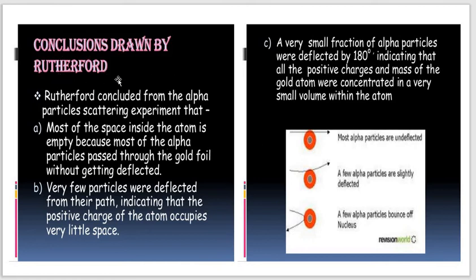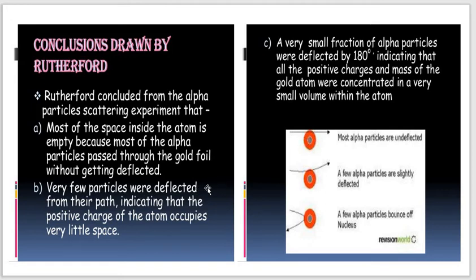Conclusions drawn by Rutherford from the Gold Foil Experiment: Most of the alpha particles passed undeflected, indicating that most of the space inside the atom is empty, because most of the alpha particles passed through the gold foil without getting deflected.